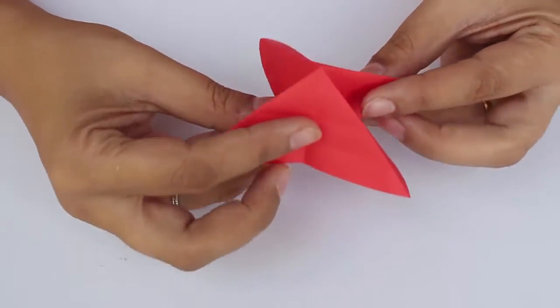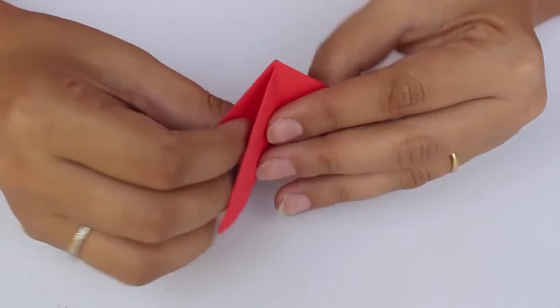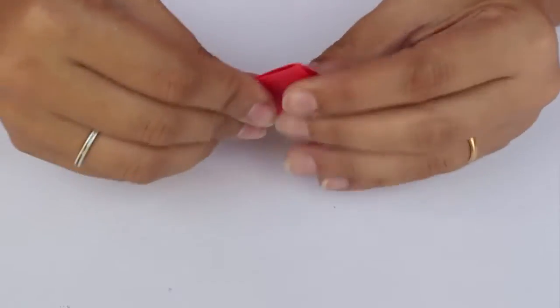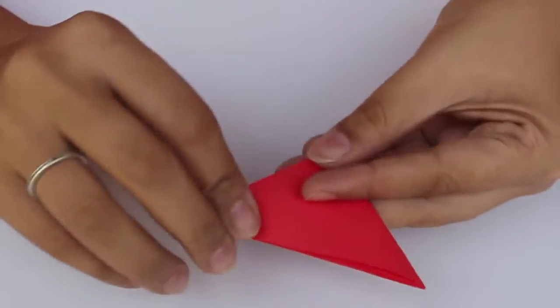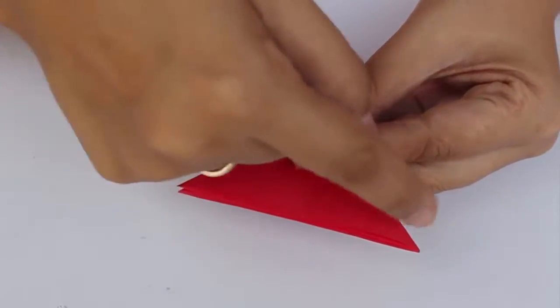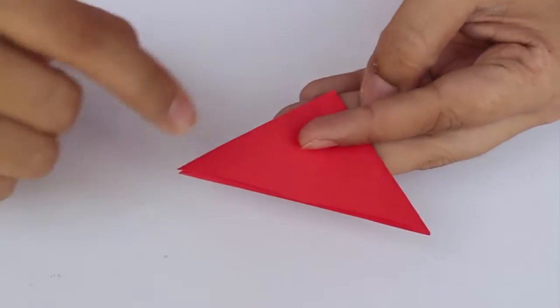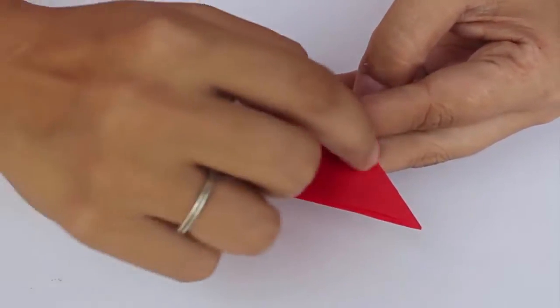When you flatten this 3D model into a 2D model like this, please make sure that the edges, the creases that you made, come on this side and they are not parallel to the base of this mountain over here. So I repeat, your creases have to be on two edges like this.